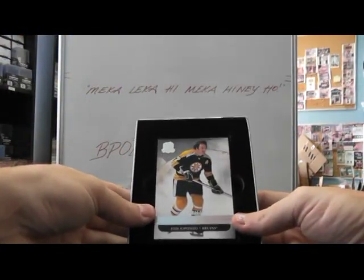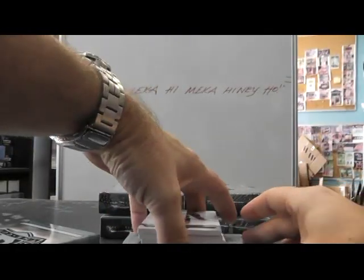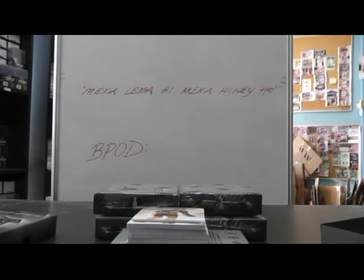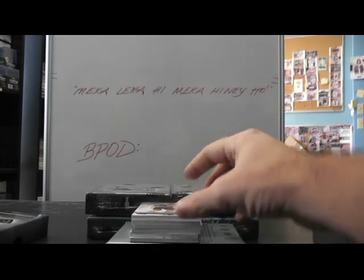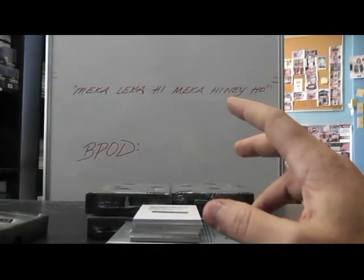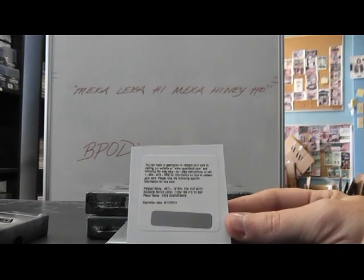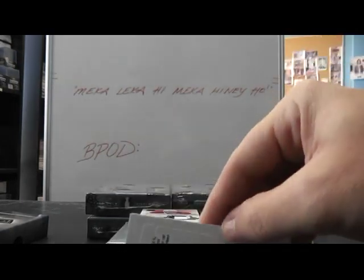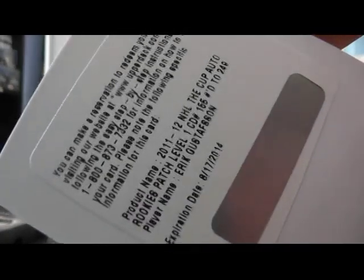Here we go, round two. We have Phil Esposito — Bruins. Someone said Messier is also an Oiler, so he might be an Oiler too. Phil Esposito, base for the Bruins. We got a rookie patch level one, numbered to 249 — Eric Gustafson. What team is that? Eric Gustafson — Panthers.